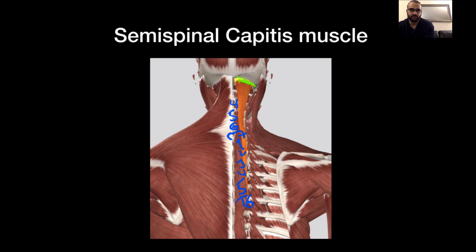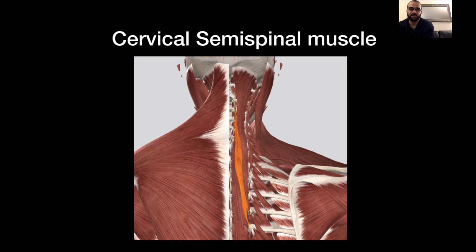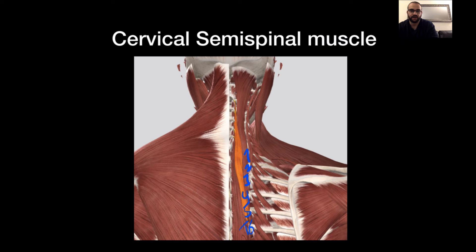The cervical semispinalis muscle originates from T1 to T6 and inserts at the transverse process of C2 to C5. These muscles pull the neck backwards and also rotate the neck to the side.